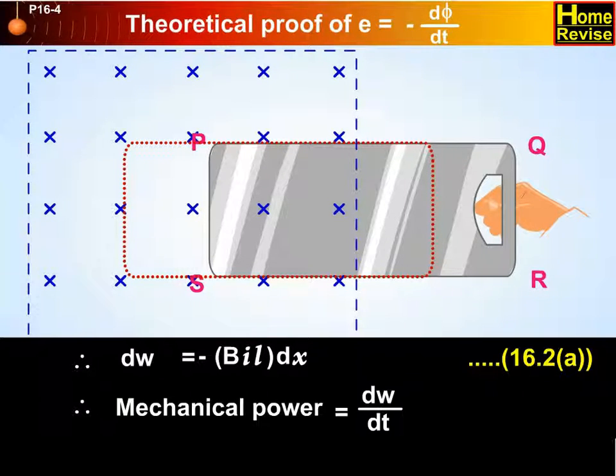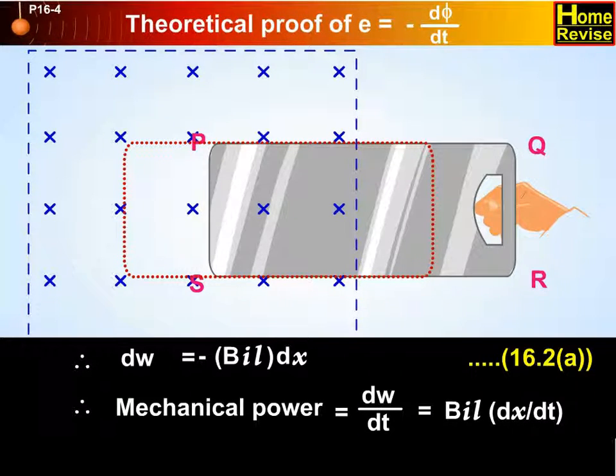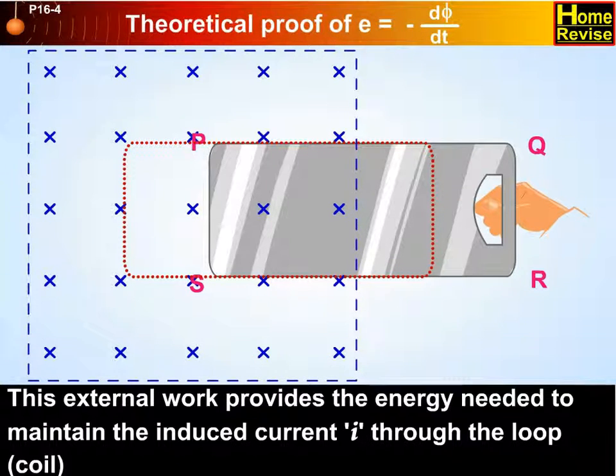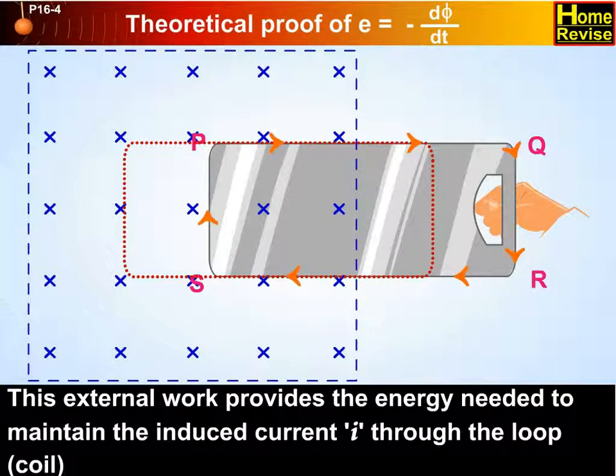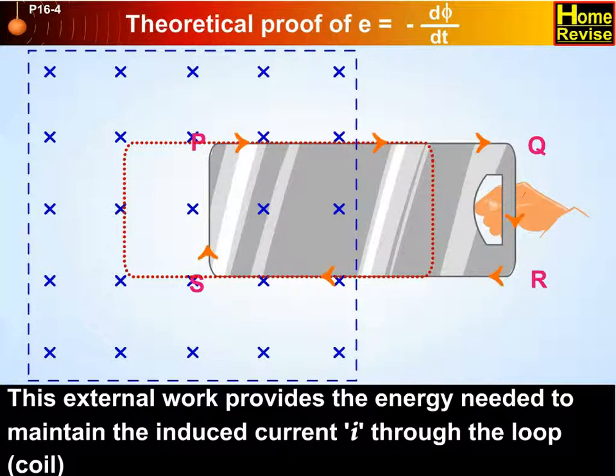Therefore, mechanical power equals dW upon dt. That equals BIL into dx upon dt. That equals BILv. This external work provides the energy needed to maintain the induced current I through the loop coil.